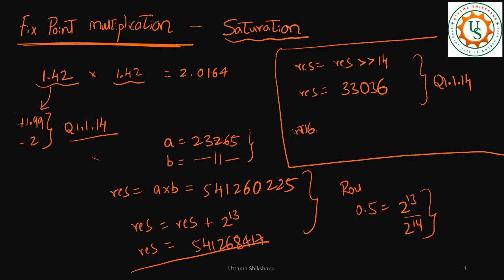Taking int16_t of the result — I have not written all the data types here, but in the previous videos I already mentioned them, so I am directly taking those values. Z = int16_t(result). To convert this to float, zf = 33036 divided by 2 to the power of 14.